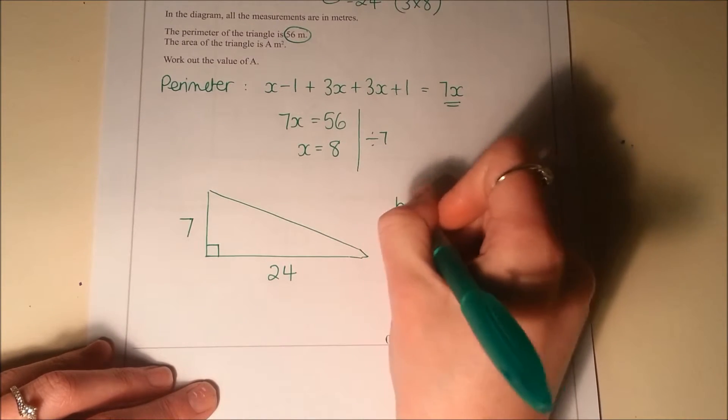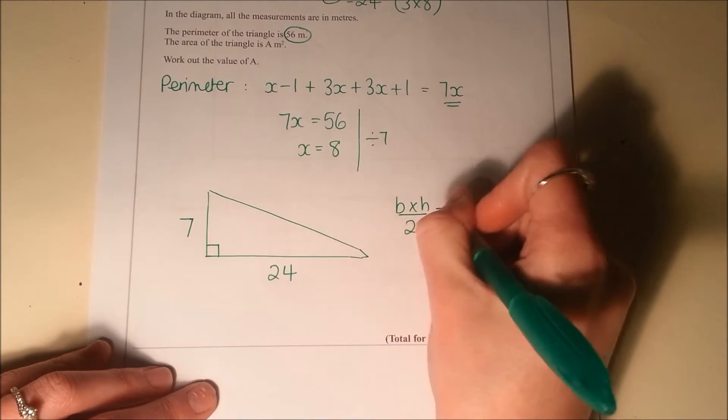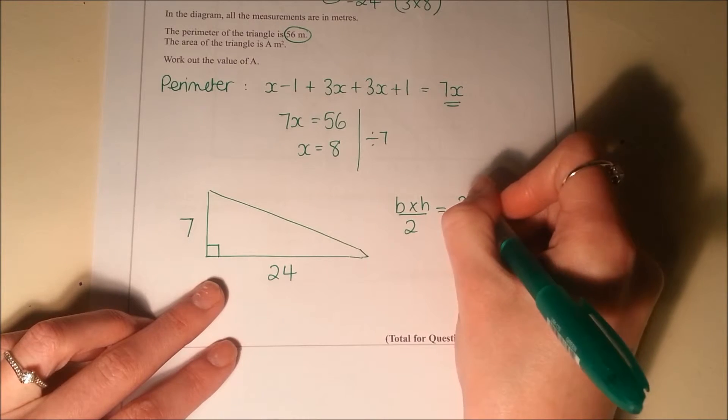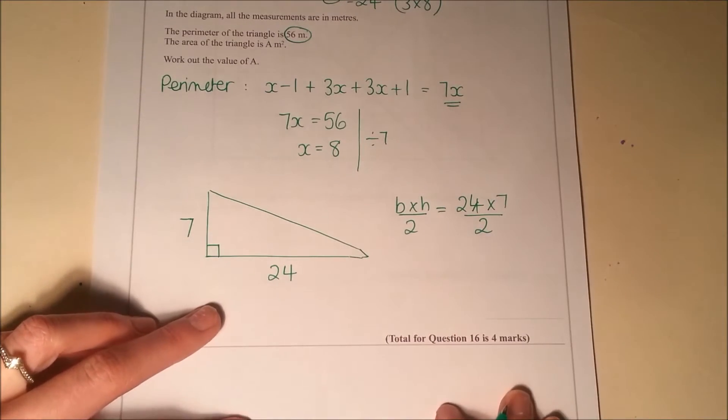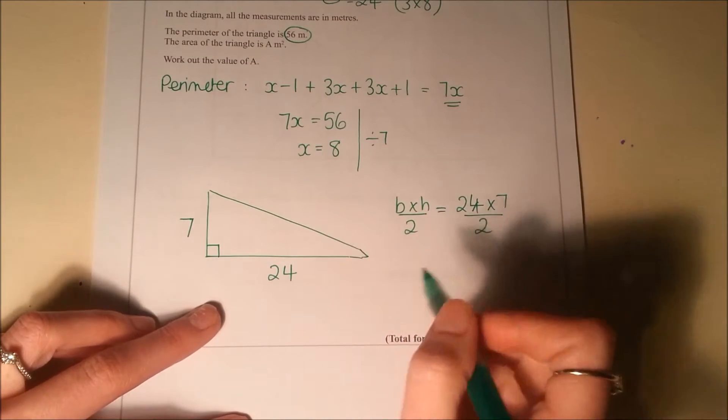So I'm going to do base times height and then half it. So 24 times 7, half that. So quick calculation for 24 times 7.